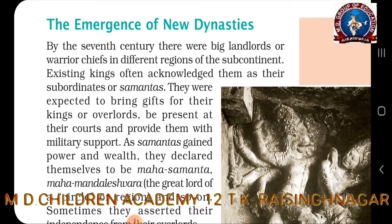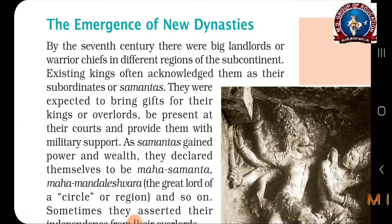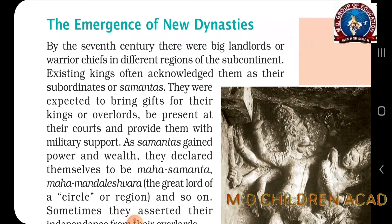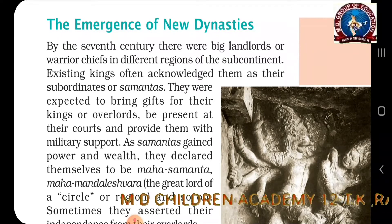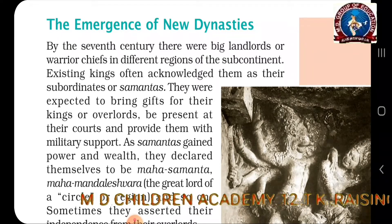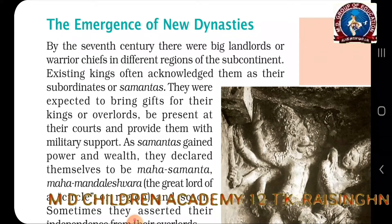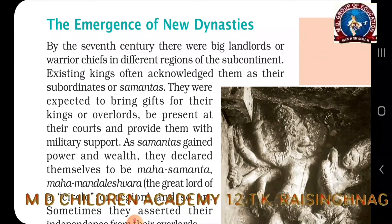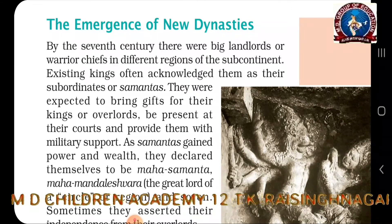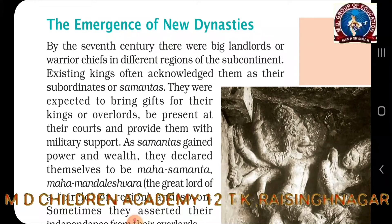These subordinate chiefs or samantas were expected to bring gifts for their kings or overlords, be present at their courts, and provide them with military support. The kings expected these subordinate samantas — who were big landlords — to help and support them.